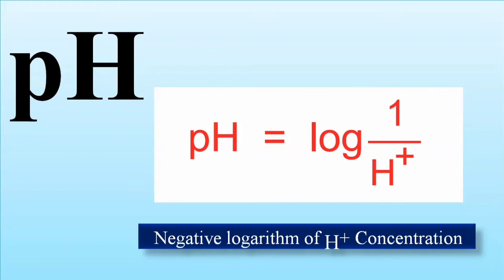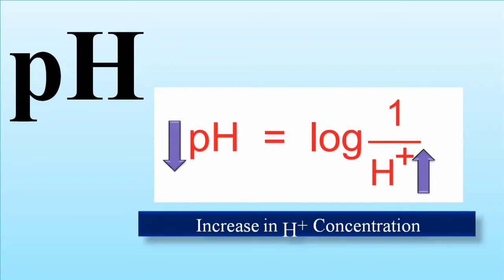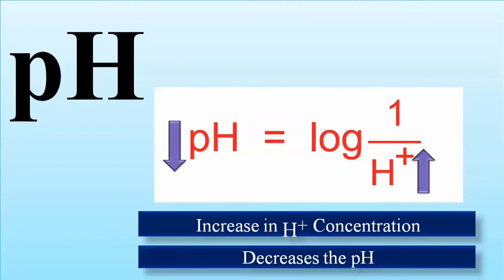By calculating or finding the hydrogen ion concentration, you can determine the pH of the body. If the hydrogen ion concentration is high in the human body — if a high amount of hydrogen ions is present in the blood — then it indicates that the pH is low. High hydrogen ion concentration tends to cause a decrease in pH.